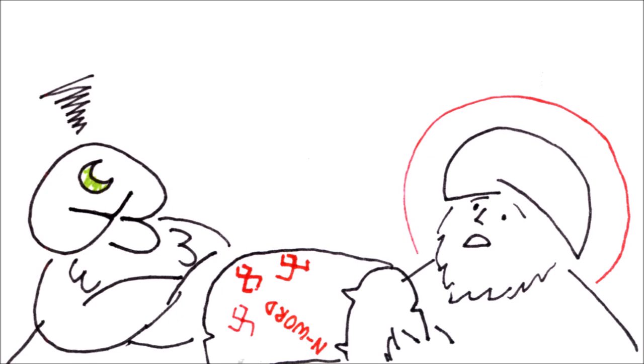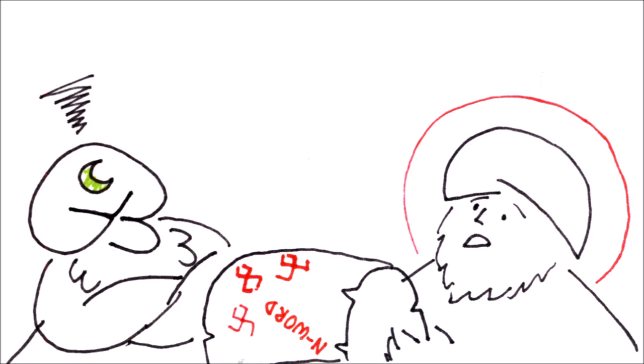The Caliph, not convinced, ordered his right hand chopped off, and put on a spike in the city square.